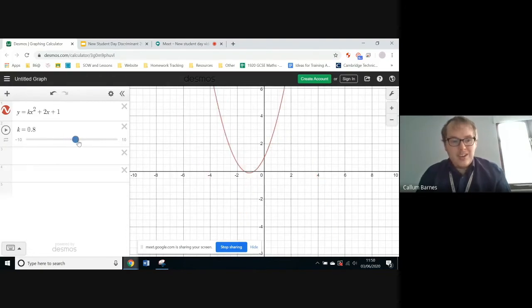You might have noticed when k was 1 exactly, it had only one distinct root in the middle. And if you make k greater than 1, it actually then ends up having no roots at all. So that sort of proves, or it doesn't prove, but it shows that our k being less than 1 was correct.